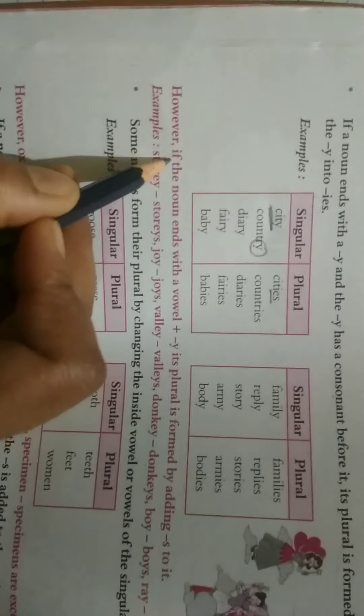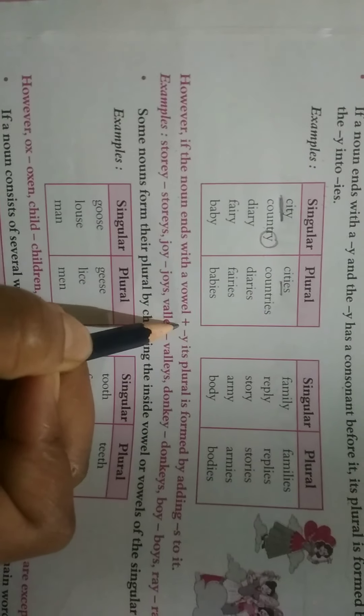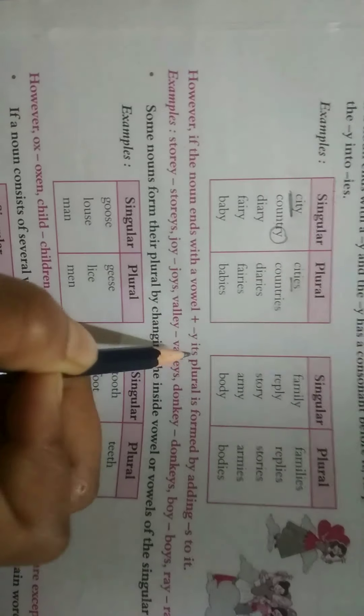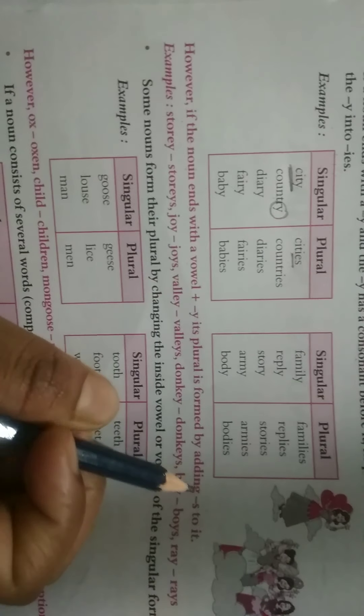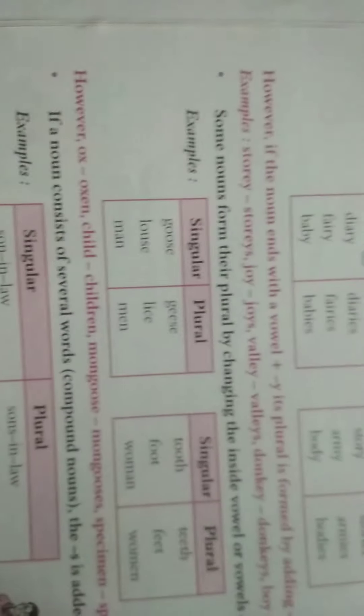Now, next is, if the noun ends with a vowel plus Y, its plural is formed by adding S. Now, look here. This word, story. Here, Y is a consonant. Now, just before this consonant, what is this E over here? E is a vowel sound.